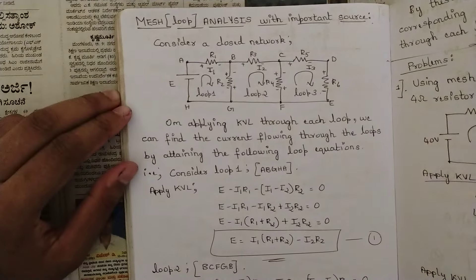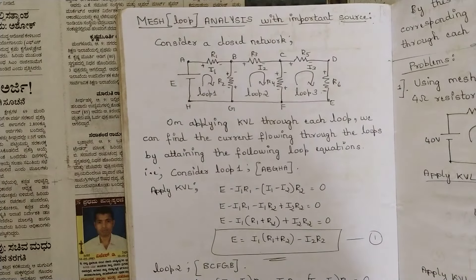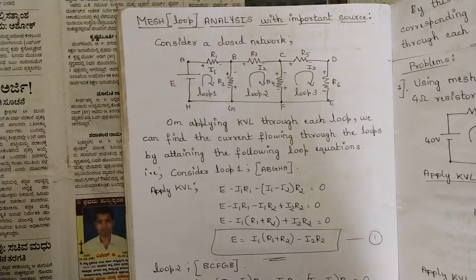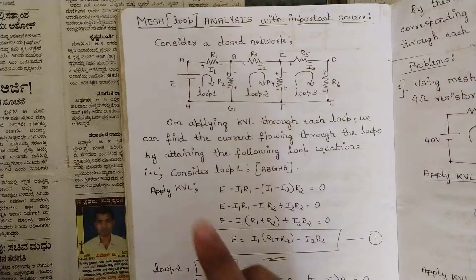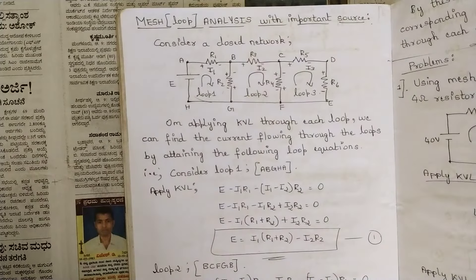Hello everyone, welcome to this new video. Till now in our previous videos we have solved many kinds of complex networks related to source transformation, source shifting, star-delta transformation, delta-star transformation. We have seen different kinds of networks, different places where the connections of the branches meet. In this topic we are going to see one more different kind of network where the connections would be in loops — closed loops — and that concept is called mesh analysis or loop analysis.